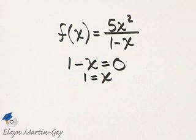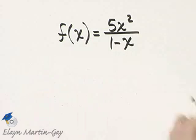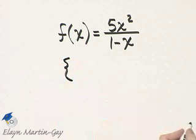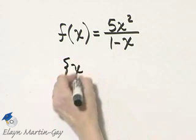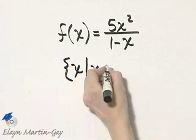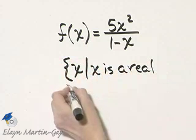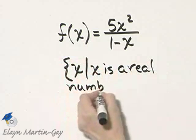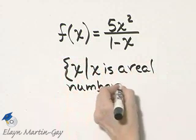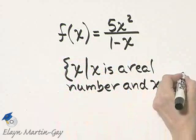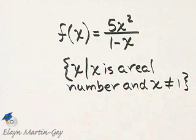So I do not want one in the domain of my function. So what is the domain? I'm going to use set notation here. It's the set of all x such that x is a real number and x is not equal to one. There's my domain of this function.